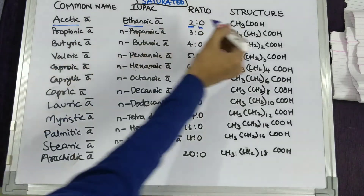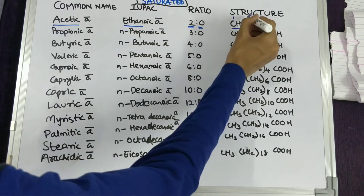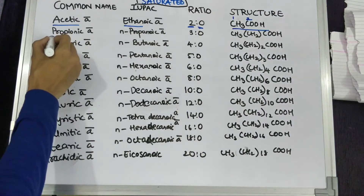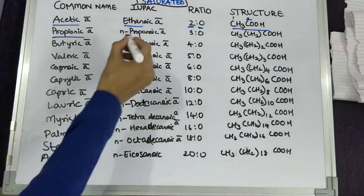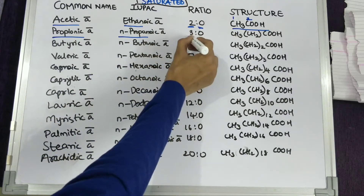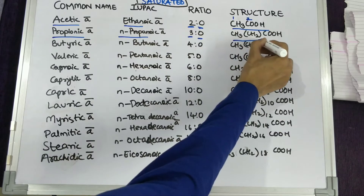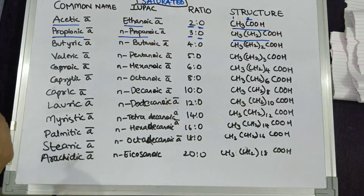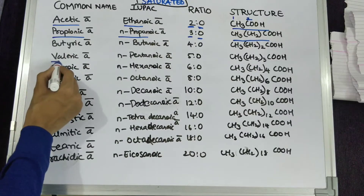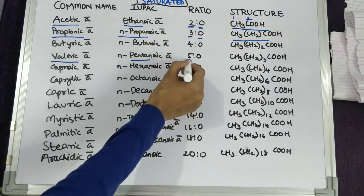The same goes for propionic acid — the IUPAC name is n-propanoic acid and the ratio of unsaturation is 3:0, as it contains 3 carbons with 0 unsaturation. Coming to valeric acid, the IUPAC name is n-pentanoic acid and the ratio is 5:0, containing 5 carbons and 0 unsaturation.